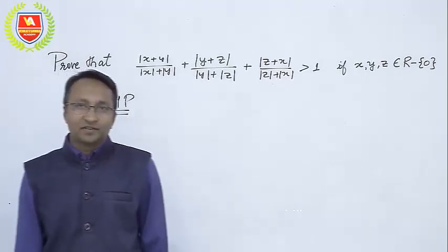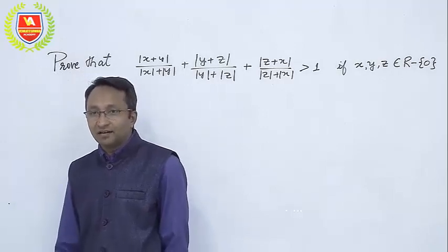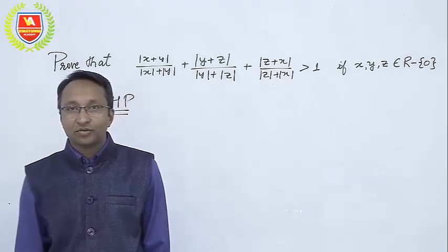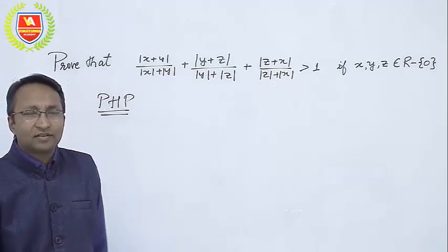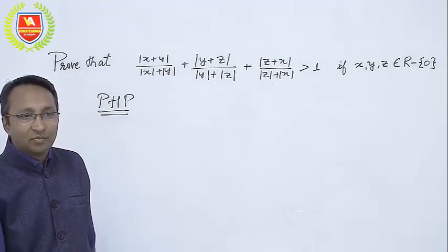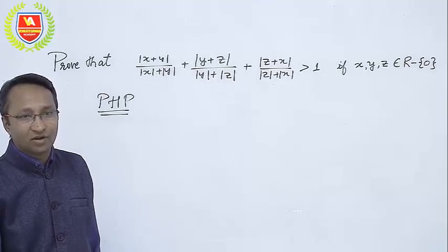What is the pigeonhole principle? The principle says that if there are fewer holes than pigeons and the pigeons are allowed to go into the holes, obviously there would be more than one pigeon in at least one of the holes.